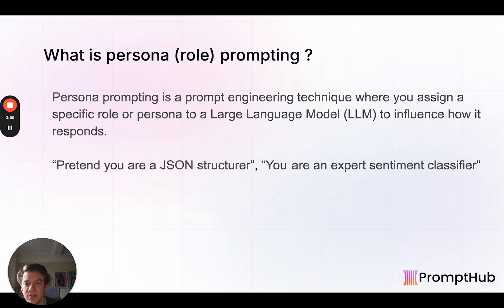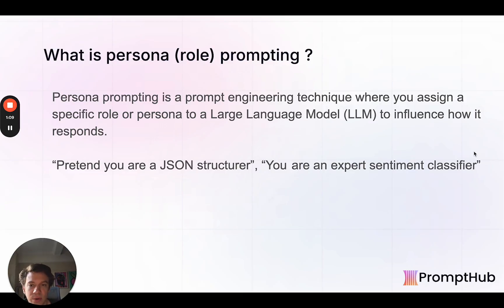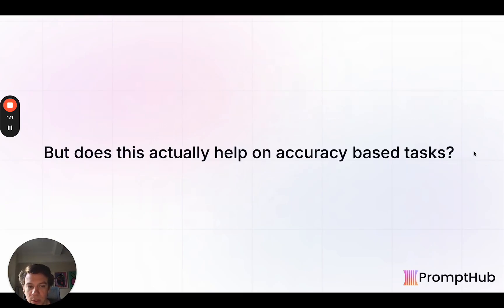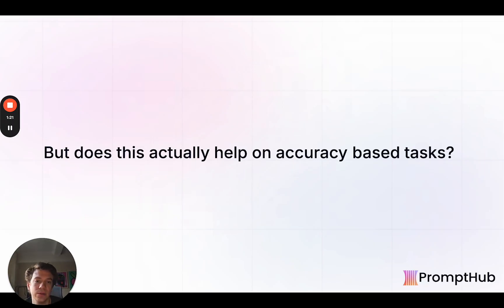In terms of just level setting, we're talking about persona role prompting — when you assign a specific role or persona to an LLM to influence its response. So pretend you're a JSON structure, sentiment classifier, talk like a lawyer, so on and so forth. There's no argument as to whether it affects creative writing type tasks. If you tell the model to talk like a cowboy, it certainly will.